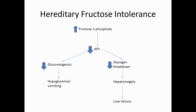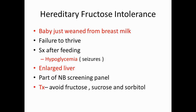Also due to low ATP, there is reduced glycogen breakdown, so glycogen accumulates in the liver, leading to hepatomegaly and eventually liver failure. This disease occurs in babies who have just been weaned from breast milk, since breast milk contains lactose. After normal feeding begins — which contains fructose — symptoms appear, including hypoglycemia, seizures, and enlarged liver.